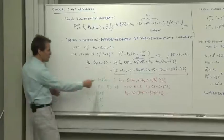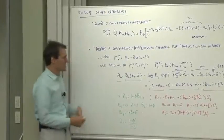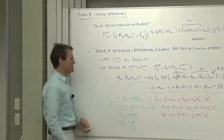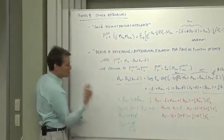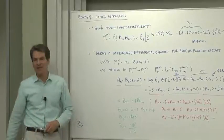b naught is 0, b1 is 1, b2 is 1 plus phi, b3 is 1 plus phi plus phi squared. What am I doing? This is a difference equation. I am solving a difference equation from the initial condition b naught equals 0, or I'm finding the formula for the bns.